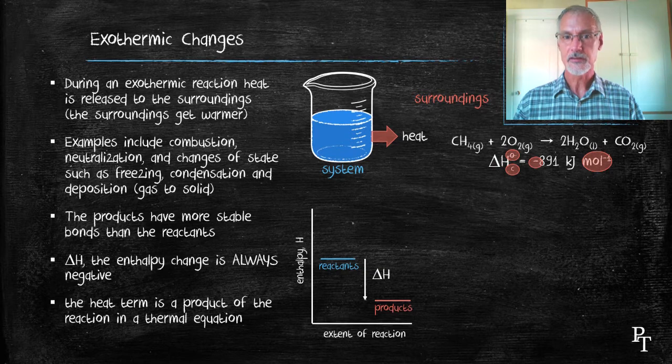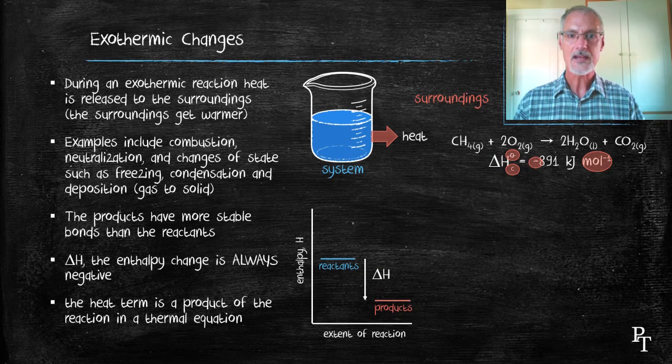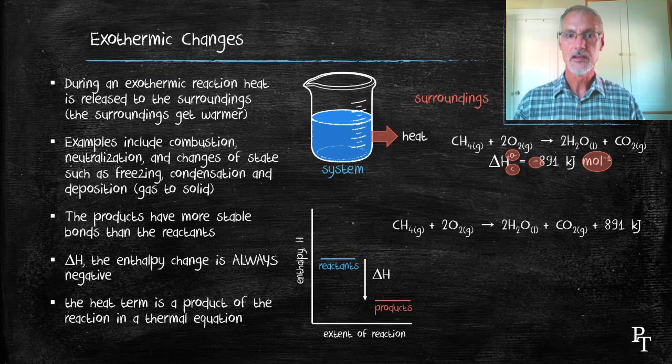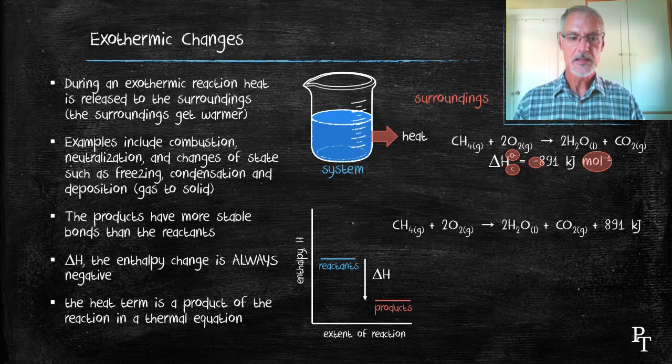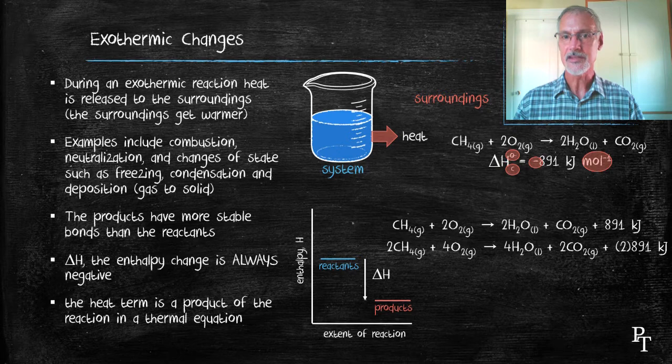We can also express enthalpy changes by means of what we call a thermal equation, where we actually embed the heat term right in the reaction itself. So here we embed the heat term for the combustion. In an exothermic reaction, the heat term is always embedded on the product side of the equation. If I double my reactants and products, I would also have to double the heat term.